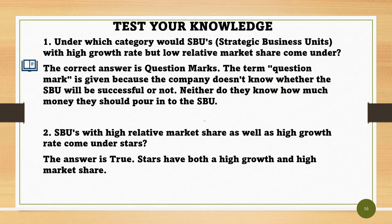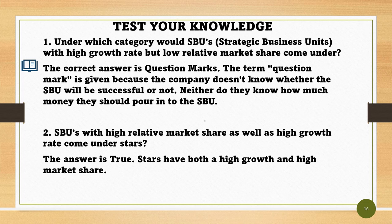Question 1: Under which category would SBUs (strategic business units) with a high growth rate but low relative market share come under? The correct answer is Question Marks. The term Question Mark is given because the company doesn't know whether the SBU will be successful or not, nor how much money they should invest. Question 2: SBUs with high relative market share as well as high growth rate come under Stars — the answer is true. Stars have both a high growth and high market share.